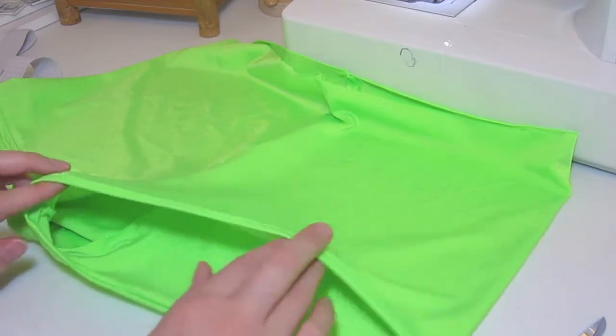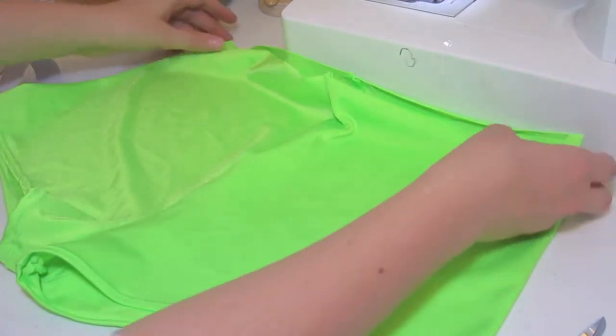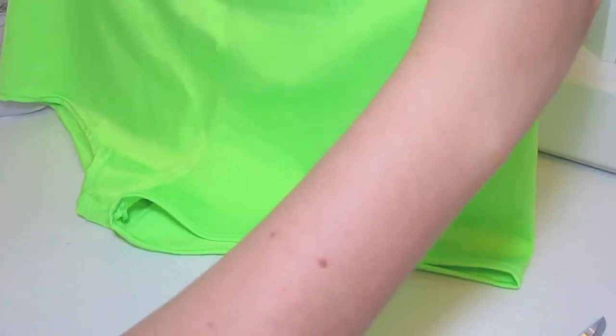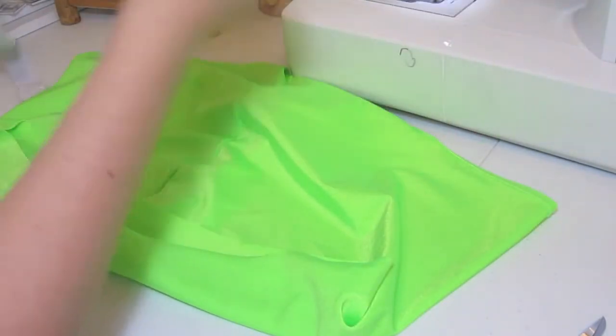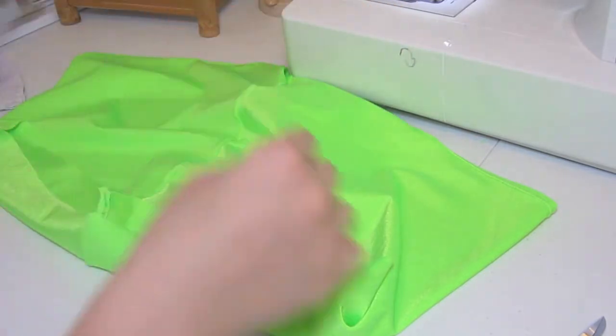Once the hem on the bottom of the shorts is done, next we're going to do the encasing at the top for the one inch elastic that we have. If you have a different size, you'll want to account for that.